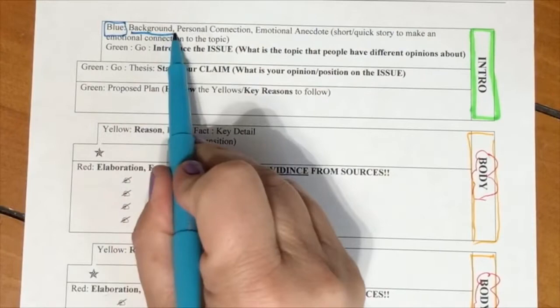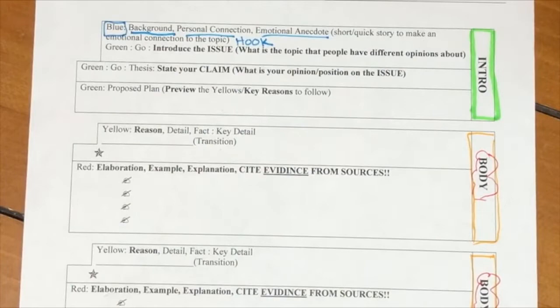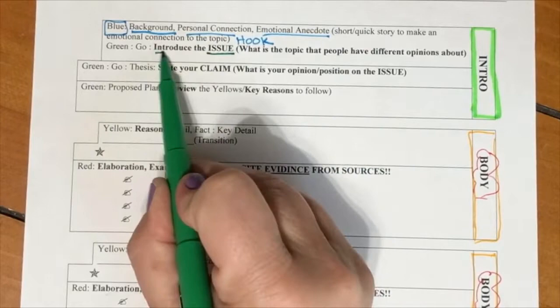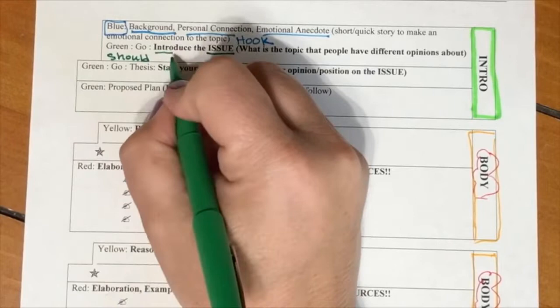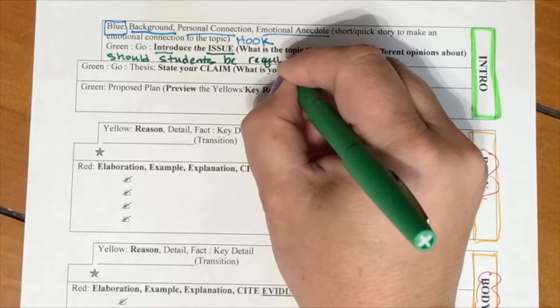Let's start off with the introduction. Our introduction, we're going to start off with a hook. We want to talk about some background information about the issue, maybe an emotional anecdote like a quick short story to make a point, a personal connection. Then in the introduction, we make sure we're clear about the issue. The issue is whether or not students should be required to stay in school until they're 18.